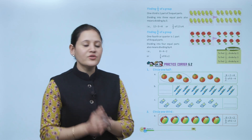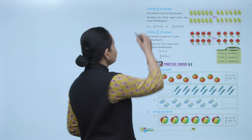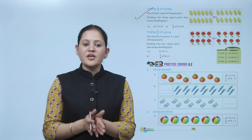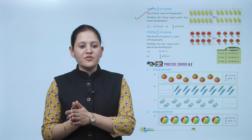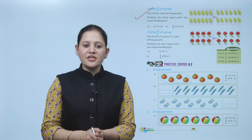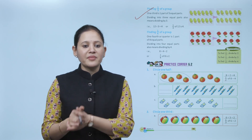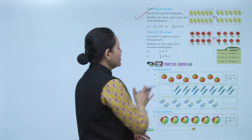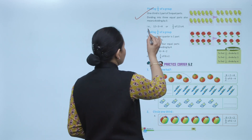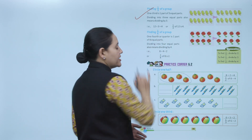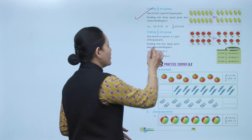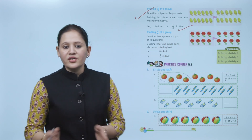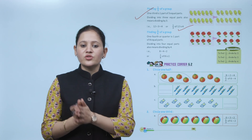Finding one third of a group: one third is one part of 3 equal parts, which means dividing by 3. Total number of ice creams is 12, so 12 divided by 3 equals 4. One third of 12 equals 4.